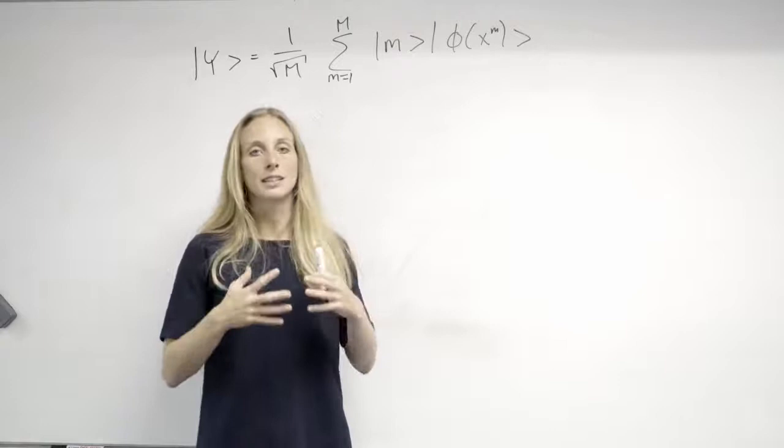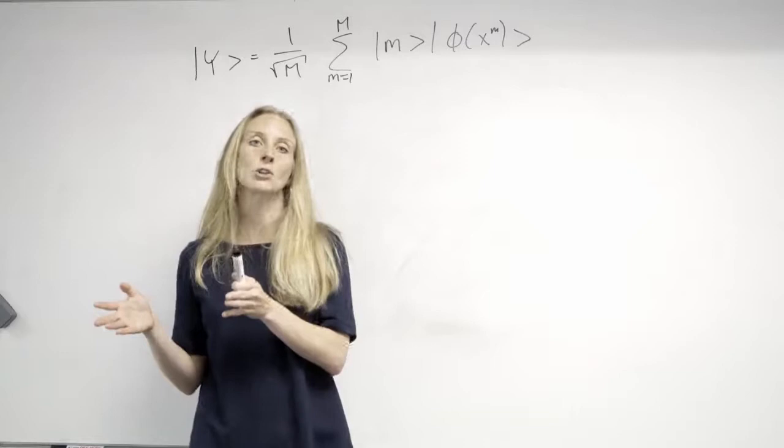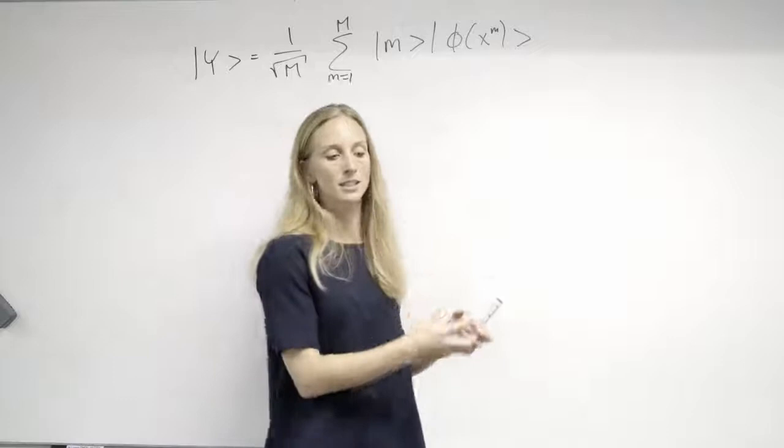We actually automatically get a density matrix that describes our quantum system that is entry-wise equivalent to the kernel matrix. So if I use a certain state preparation routine to encode my data set into a quantum state and we look at the density matrix of that quantum system, we have the Kernel-Gram matrix.